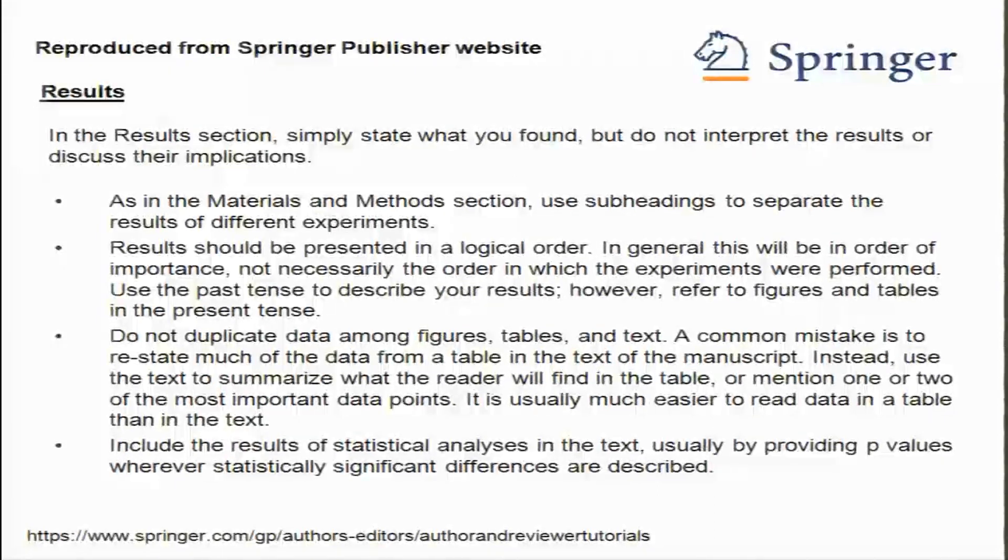Include the results of statistical analysis in the text. You have to say that you have tested the significance of differences, and state the level of significance — what you call a p-value — and what method you have used. These can be added in the body of the manuscript or in the legend for a table or figure.